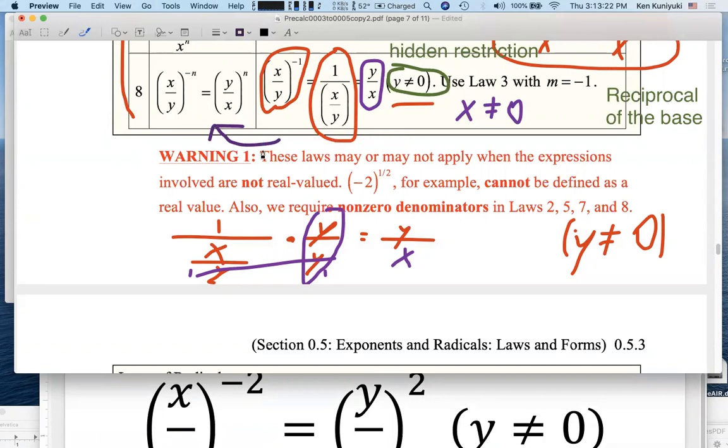So before, I talked about how the reciprocal of x over y, all raised to the negative one exponent, is y over x. That's called the reciprocal of the base x over y, with y not being zero as a hidden restriction.